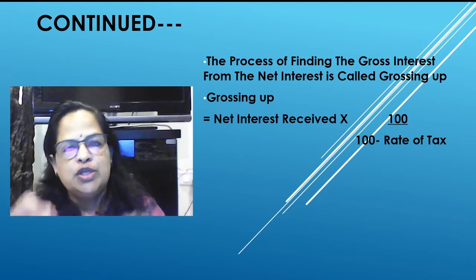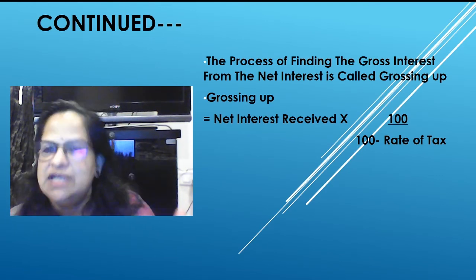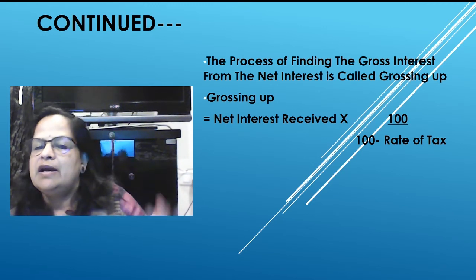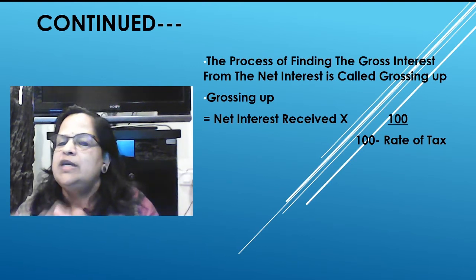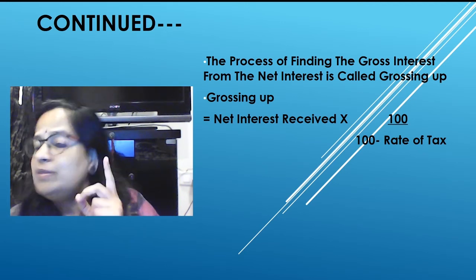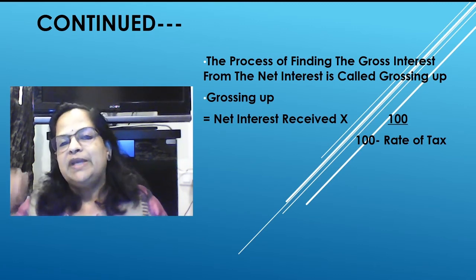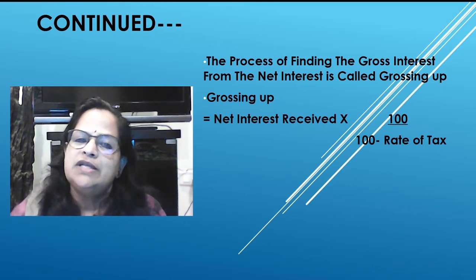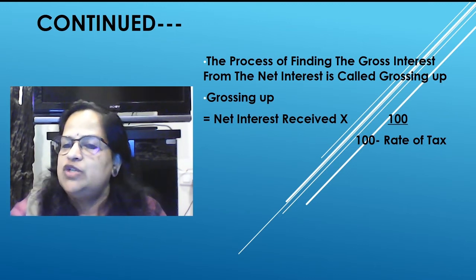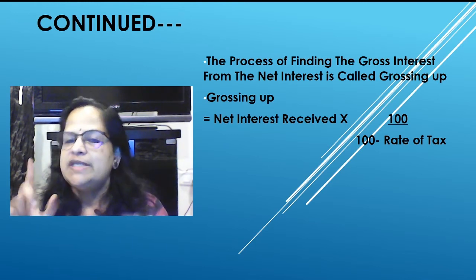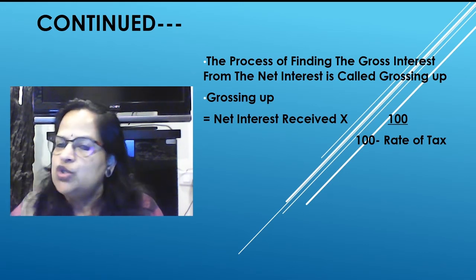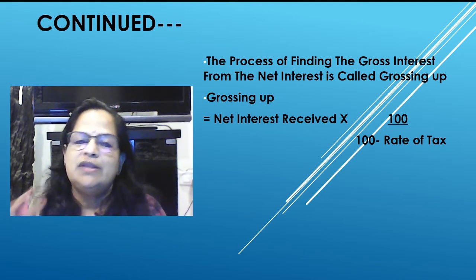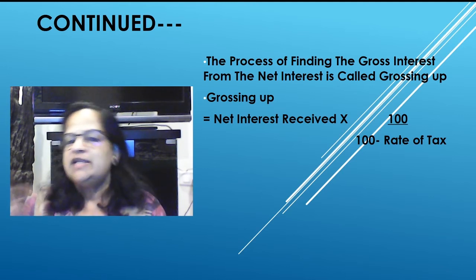Grossing up: when you receive net interest, you must convert it to gross. The formula is: gross interest = net interest × 100 ÷ (100 − rate of tax). Two rates to remember: 10 percent is the usual rate for interest, dividends, etc.; 30 percent applies to casual income like lottery winnings, crossword puzzles, and horse races. Remember these two rates — 10% and 30%.